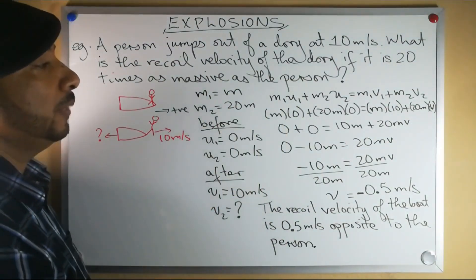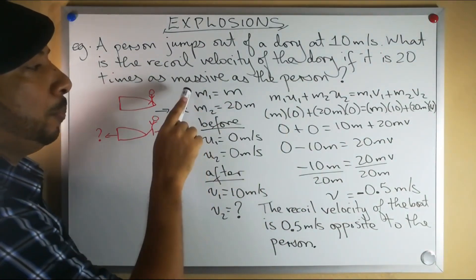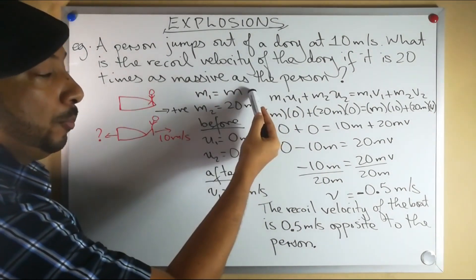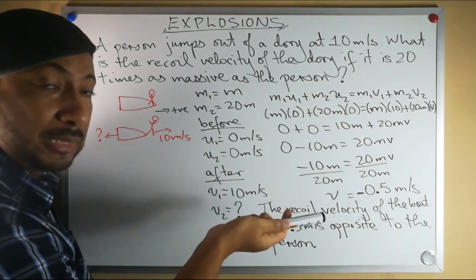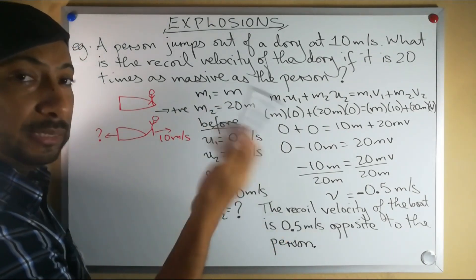That's enough information. What we can do is we can say let the mass of the person be m, and then the mass of the dory will be 20m, because that is 20 times as massive - it is 20 times m, 20m.